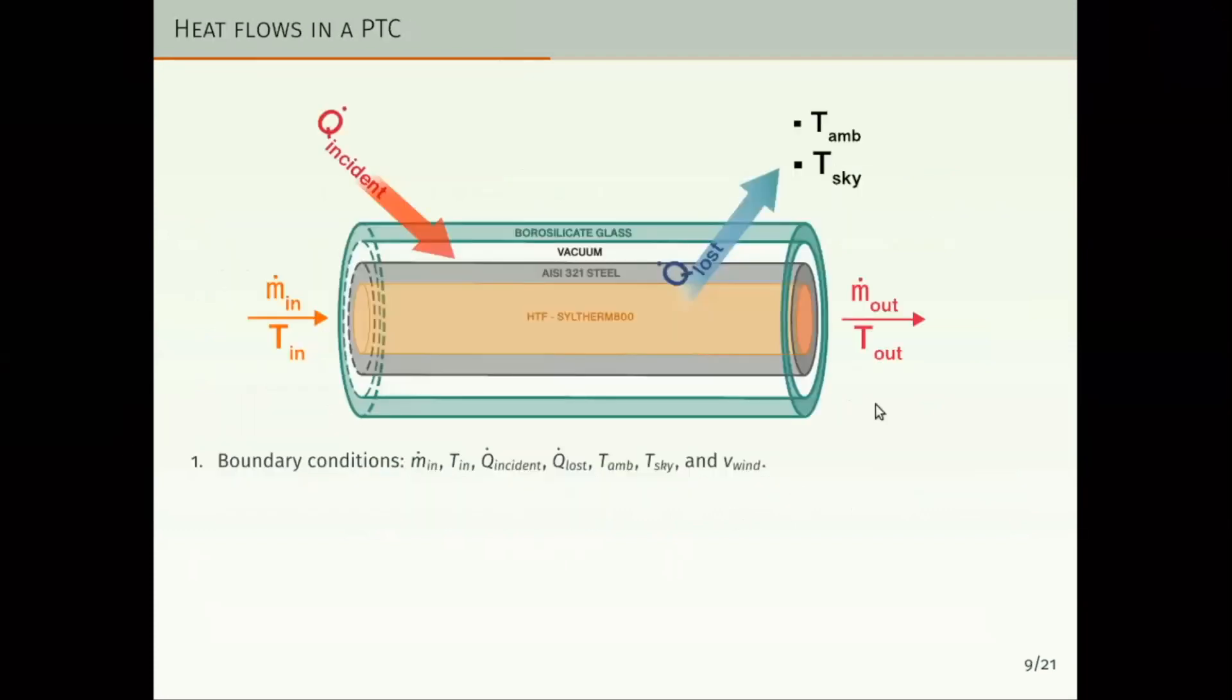In this slide we present a simplified absorber pipe, where we can see in the external part the borosilicate glass, what we call in the paper the envelope glass, or the glass envelope. Inside of this borosilicate glass we have a steel pipe, and inside of the steel pipe we have the fluid, the heat transfer fluid, moving along the Parabolic Trough Collector. In this case the fluid is SYLTHERM 800, that is a commercial solution.